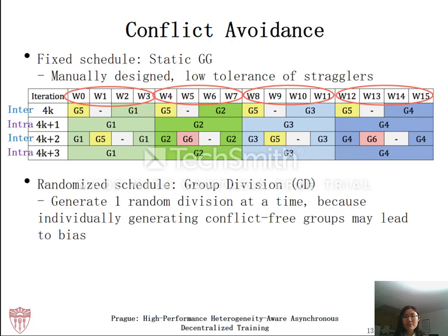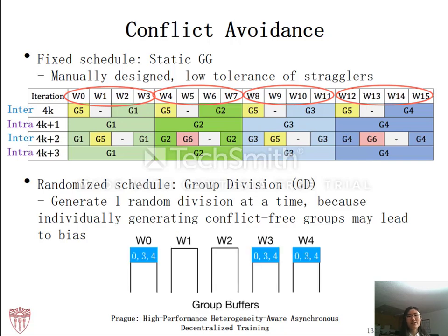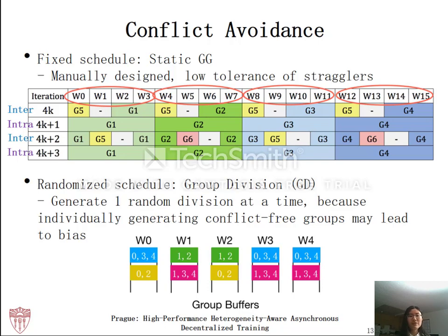For a random schedule, we propose group division. When a worker requests a group from GG, instead of generating just one random group, GG will generate a random division — that is, randomly divide all workers into non-conflicting groups. The reason is that when groups are generated individually in a conflict-free way, it can easily lead to division bias where some workers are always grouped together. For example, when GG randomly generates group 034, it may also generate group 1, 2. And next time GG may generate groups 0, 2 and 1, 3, 4.